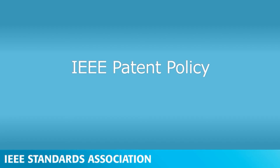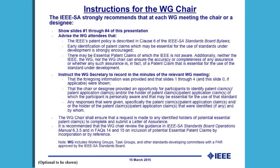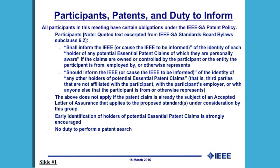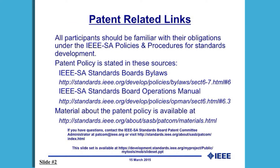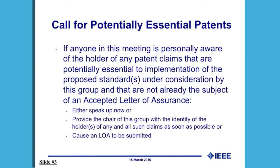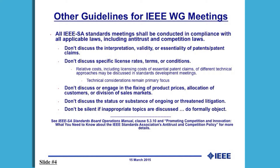The next agenda item is to do a call for patents. Erin, please display the patent slides. You'll now see the information on the IEEE patent policy. Is anyone aware or a holder of any potentially essential patents? If so, please speak now or contact the working group chair to call the letter of assurance to be requested. We will pause a moment to allow the participants to identify any potentially essential patents or patent holders. If you would like further information on the patent policy from the IEEE or to review these slides again, the URL is provided in the attachment. Erin, please note in the minutes that there was no response to a call for potential essential patents.